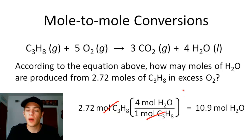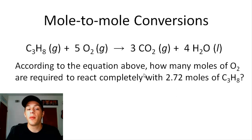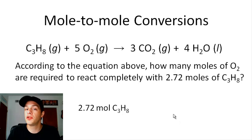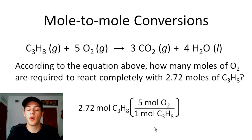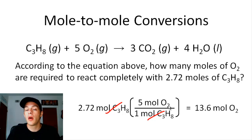Let's do one more quick example of a mole-to-mole conversion. This time, instead of converting from moles of a reactant to moles of a product, we're going to convert from moles of one reactant to moles of another reactant. The problem says: according to the equation above, how many moles of oxygen are required to react completely with 2.72 moles of propane? Starting with 2.72 moles of propane, we convert to moles of oxygen using the coefficients. The coefficient for propane — which is 1 — goes on the bottom, and the coefficient for oxygen — which is 5 — goes on top. Moles of propane cancels out, and we get 2.72 × 5 = 13.6 moles of oxygen. Mole-to-mole conversions are nice, easy, and only take one step, but they're not very common.